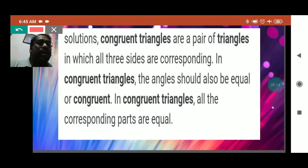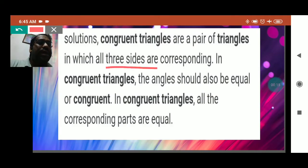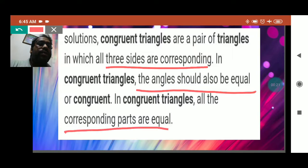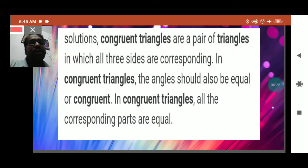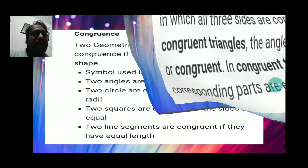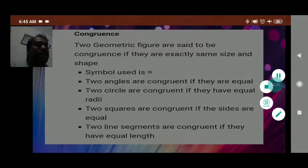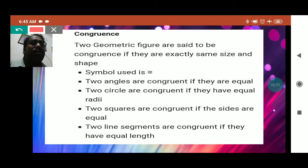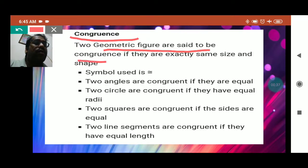Two triangles are congruent if three sides are corresponding — meaning the angles are also equal and the corresponding parts are also equal. In this way two shapes can be congruent. So this is the meaning of congruency: two geometrical figures are said to be congruent if they are exactly the same size and shape.